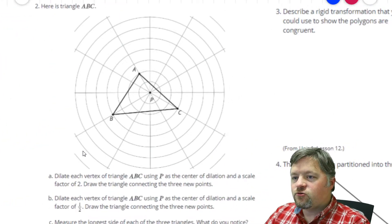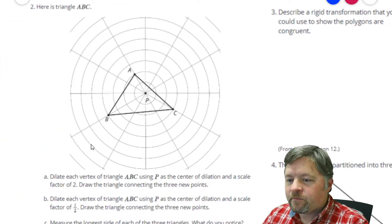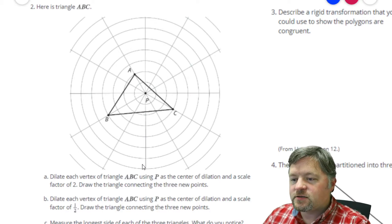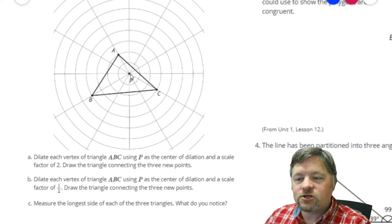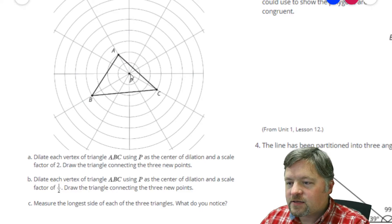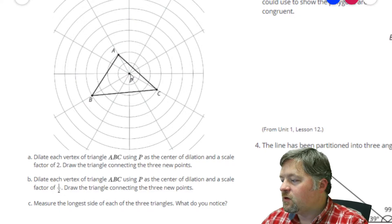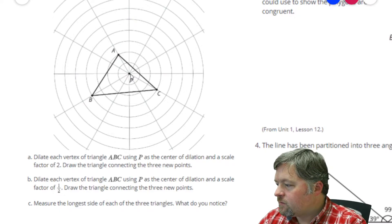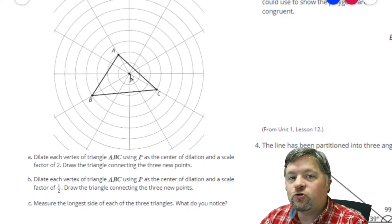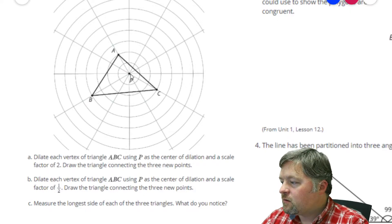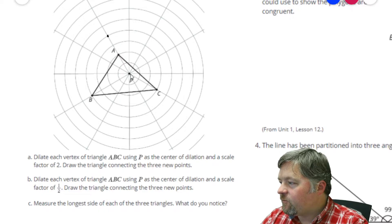Here is triangle ABC. Dilate each vertex of triangle ABC using point P as the center of dilation. Well, A is 1, 2 units away. Scale factor of 2, 2 units will become 4.